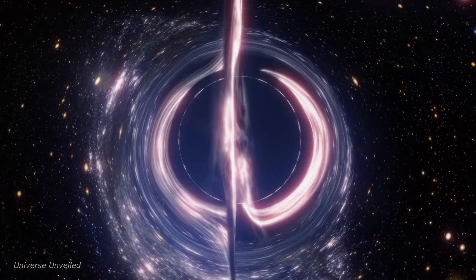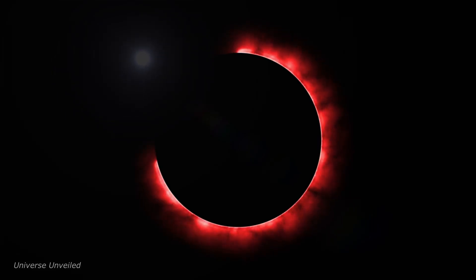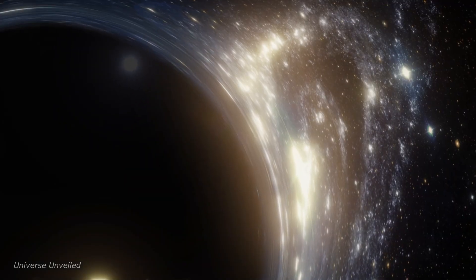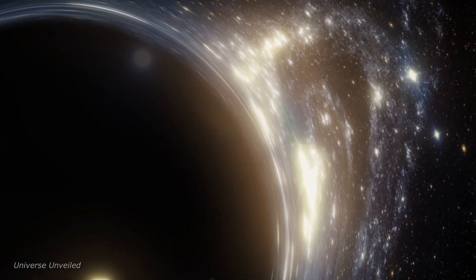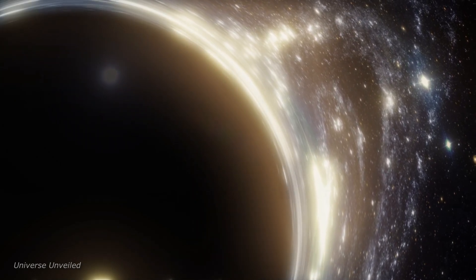In the vast expanse of the cosmos, there are objects so luminous that they outshine entire galaxies, their light traveling billions of years to reach our telescopes. These cosmic beacons are known as quasars, powered by the intense activity surrounding supermassive black holes in the early universe.